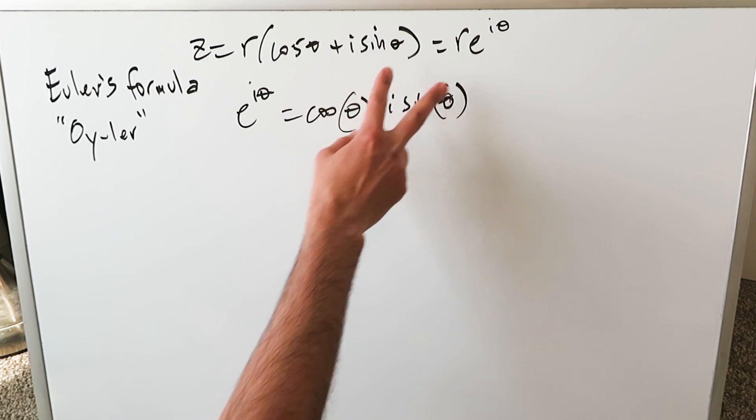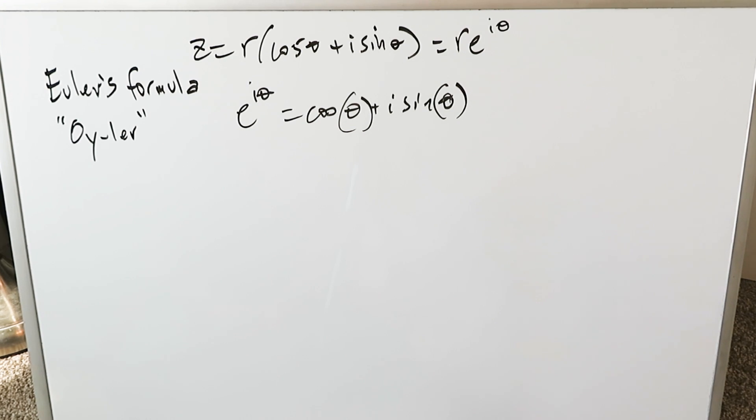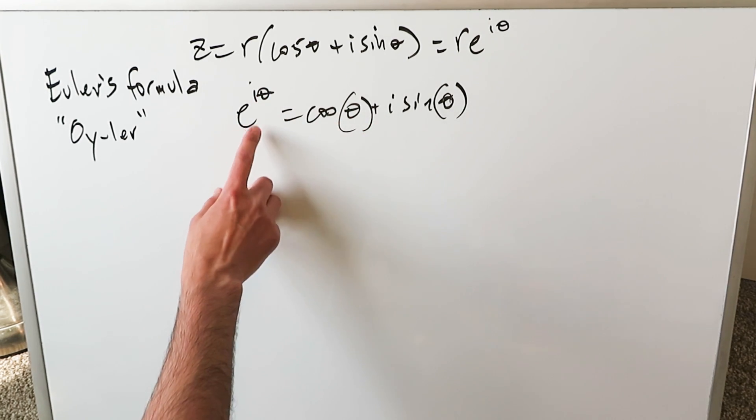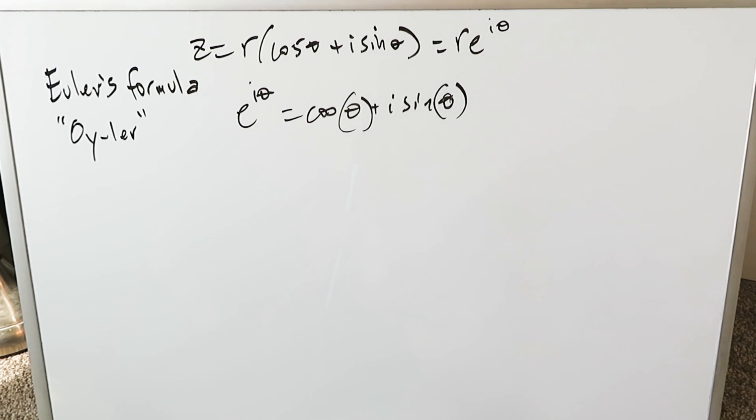When you equal the left hand with the right hand you have this representation. You can flip it around, there's no problem in doing that. The r's can cancel out. E to the power of i theta is equal to cosine theta plus i sine theta where the value of theta is represented in terms of radians.